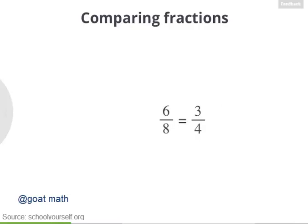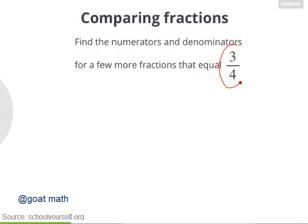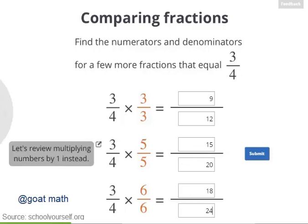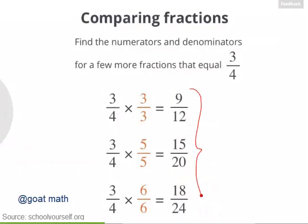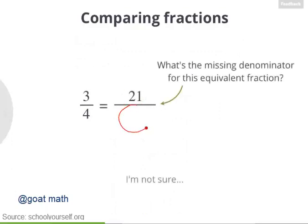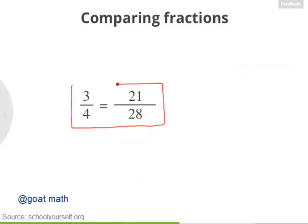Try multiplying 3 fourths by 3 thirds, 5 fifths, and 6 sixths — all equal to 1 — to find more fractions that equal 3 fourths. So 3 fourths equals 9 twelfths, 15 twentieths, and 18 twenty-fourths. There are lots of fractions equal to 3 fourths, and one of them has a 21 in the numerator. What's the denominator? Yes — 3 fourths equals 21 twenty-eighths, which you can see by multiplying 3 fourths by 7 sevenths.